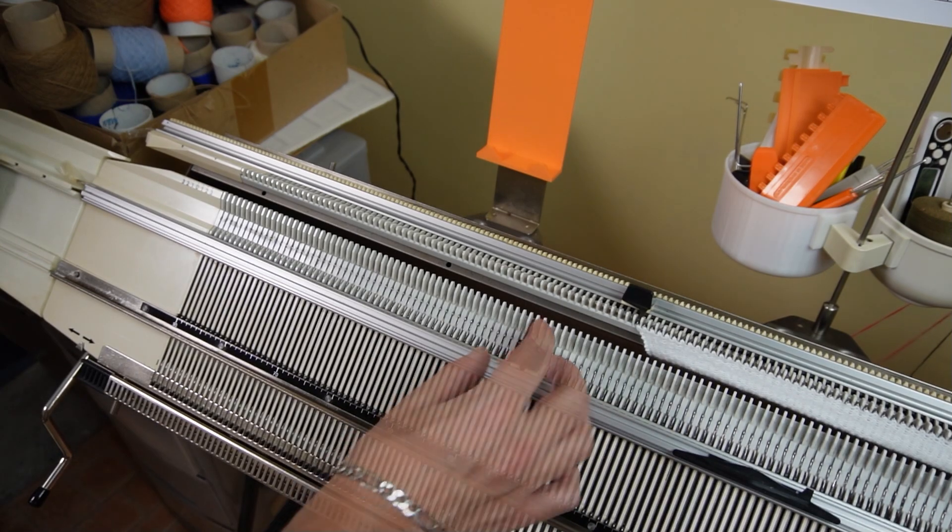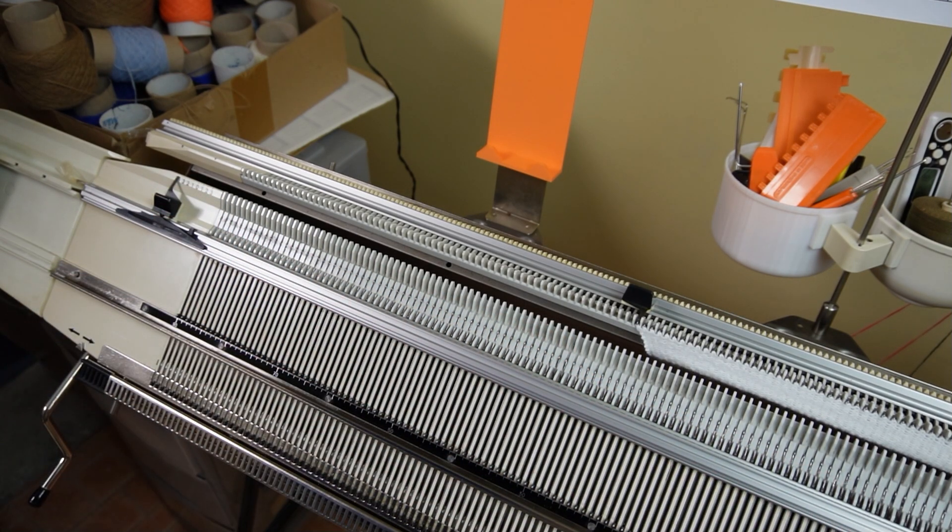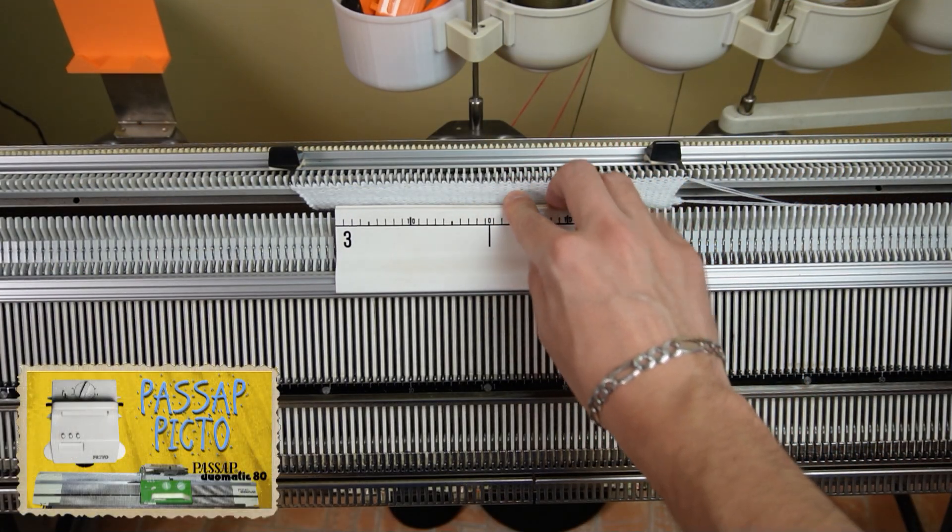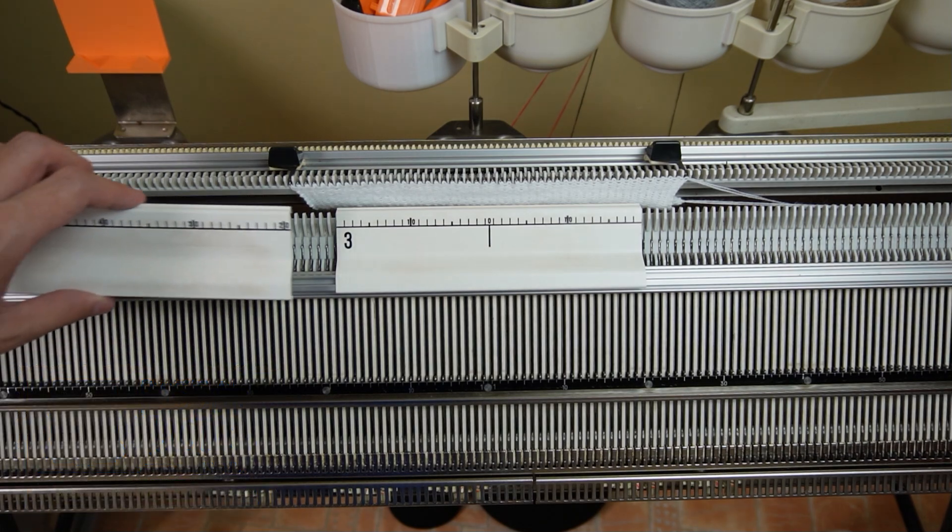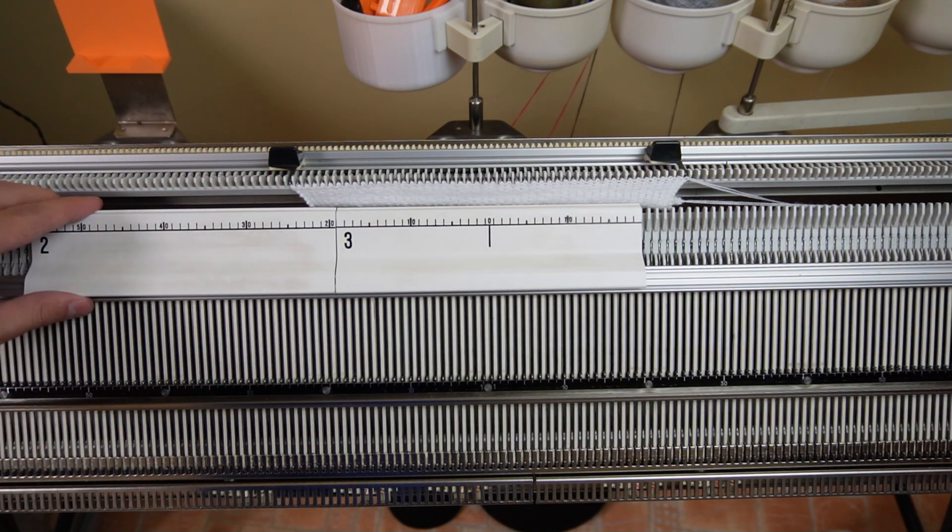Drop the front bed then slide the edge springs and the trip cam for the row counter to the sides. Now place the plastic covers on the front bed. Start by placing the middle one and make sure it is perfectly centered according to the needle scale on the front bed.